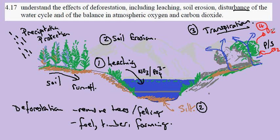This means that if we remove the trees then we remove the balancing effect of oxygen and carbon dioxide. And so we disrupt the balance in the atmosphere of oxygen and carbon dioxide. Some of the effects of deforestation.